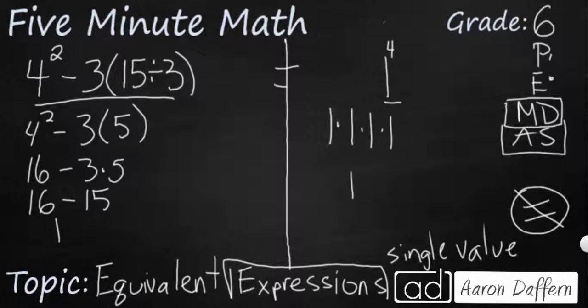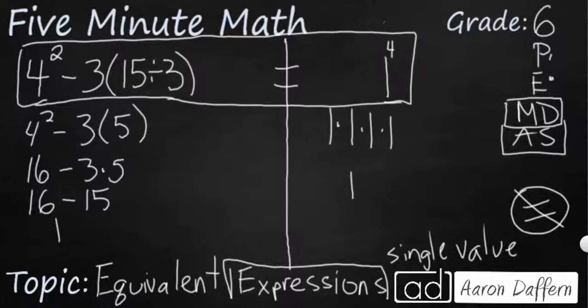So you can say that these two are equivalent expressions. And if you put an equal sign between the two, you could then make an equation. Because both sides of this equation are balanced because you have equivalent expressions.